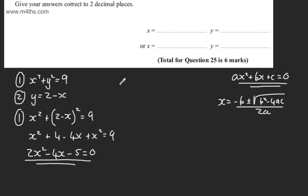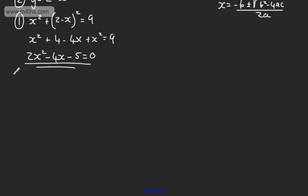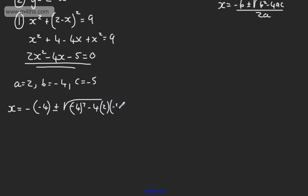So we can say now that our value of a in this particular case is going to be 2, our value of b is going to be minus 4, and our value of c is going to be minus 5. So we can say that x will be equal to minus, then we can have the minus 4, plus or minus the square root of minus 4, which we need to square, minus 4 times by a times by c, and that's all over now 2 lots of the 2.